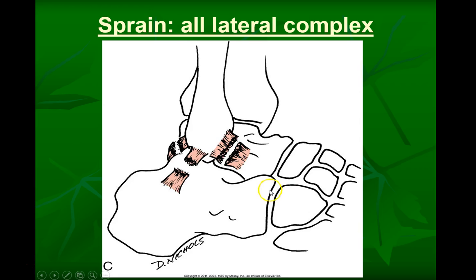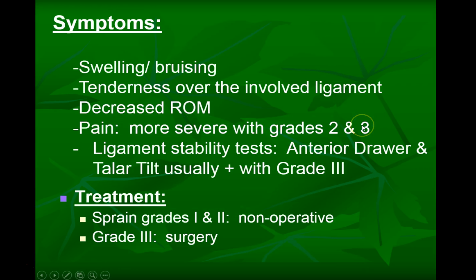With a grade one sprain, you won't see much appreciable swelling or bruising. Grade two and three present with more severe pain, more swelling, and bruising in the lateral ankle complex. Special tests include the anterior drawer — similar to the knee — and the talar tilt test, which is positive with grade three or full tears of the lateral complex.